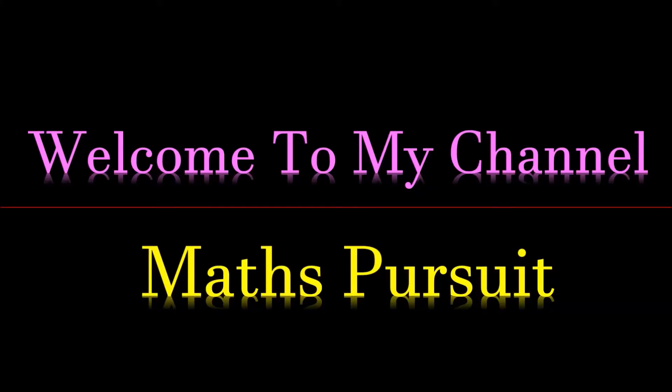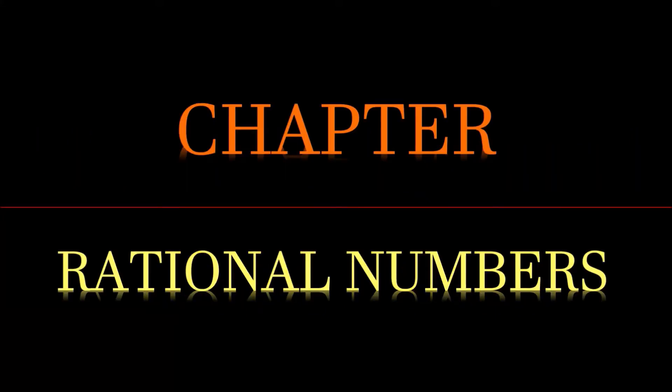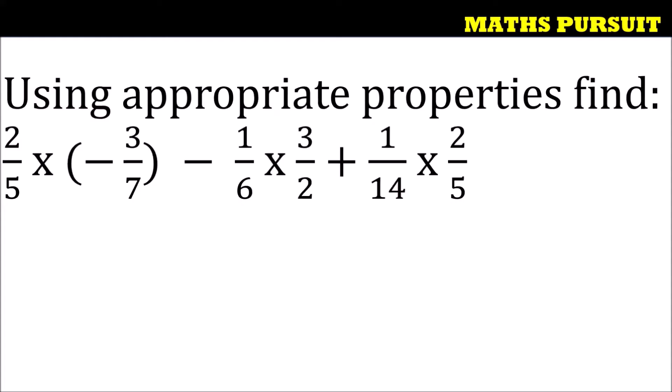Welcome to my channel Maths Pursuit. Today we will look into the chapter called Rational Numbers. The given question is: using appropriate properties, find 2/5 × (-3/7) - 1/6 × 3/2 + 1/14 × 2/5.